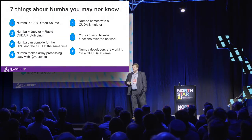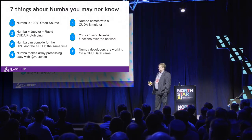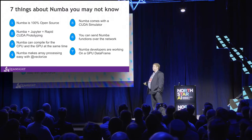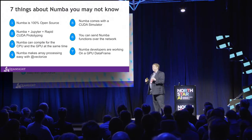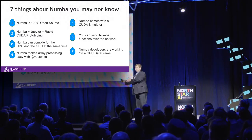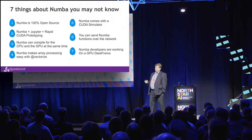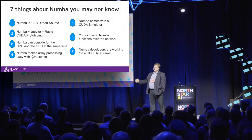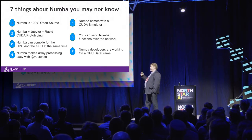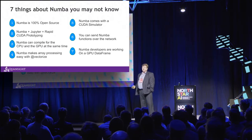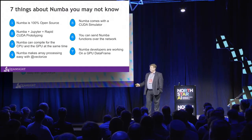A few things you may not know about Numba: it's 100% open source. Early on at Anaconda we were selling something called Numba Pro, which was basically Numba for GPU, for a couple of years. Now I'm a believer in complementary products — not open core. Numba is completely 100% open source. Numba and Jupyter together enable very rapid CUDA prototyping because there's a CUDA simulator — you can write Python code to simulate your CUDA code. Numba can also compile for the GPU and CPU at the same time using LLVM, the same technology NVIDIA uses to generate code from PTX. And there's a new concept called a GPU data frame being worked on.